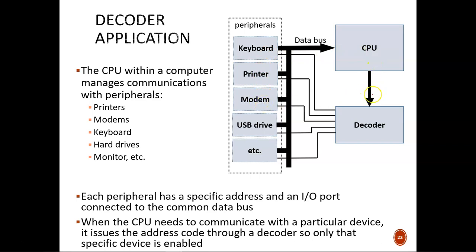How can it do this? It sends the address code, which is in binary, into a decoder, which then produces just one active output line. That active line enables the connection between the one specially selected peripheral and the data bus. Meanwhile, the other connections are inactive, which means there's no data conflict.